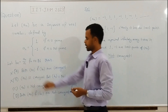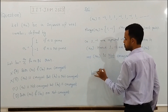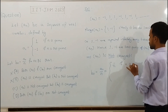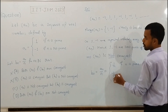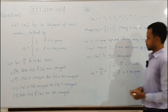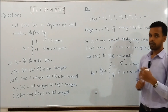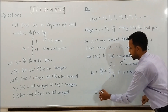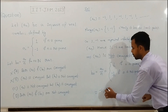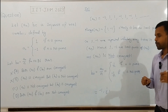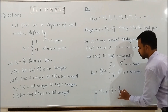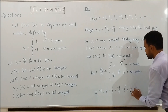Now let's write a few terms of sequence bn, defined as bn = an/n, which equals 1/n if n is prime, and -1/n if n is not prime. When n = 1 (not prime), b1 = -1/1 = -1. When n = 2 (prime), b2 = 1/2. When n = 3 (prime), b3 = 1/3. When n = 4 (not prime), b4 = -1/4. Then 1/5, -1/6, 1/7, and so on.